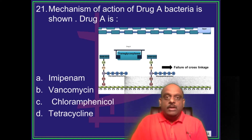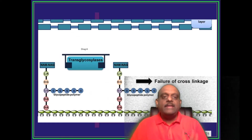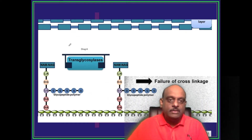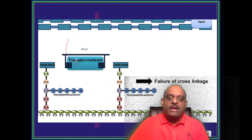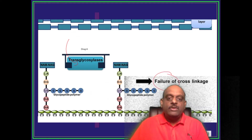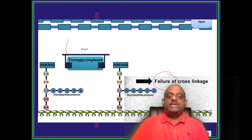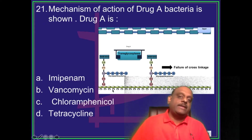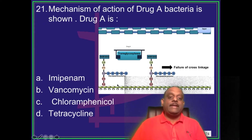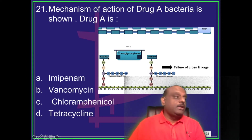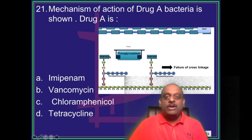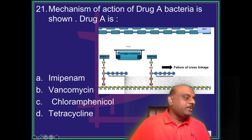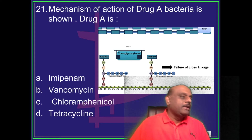There is a drug that acts on transglycolases, causing failure of cross-linkage in the bacterial cell wall — that is how its antibacterial action works. So which antibiotic has this mechanism of action? What is the drug? That is the question for all of you.